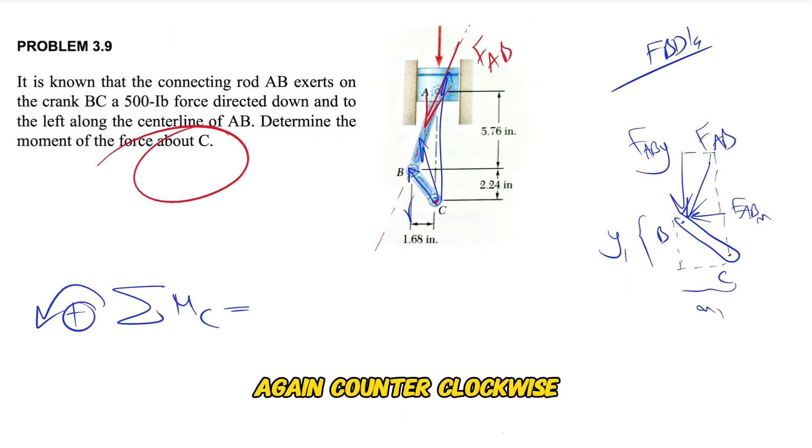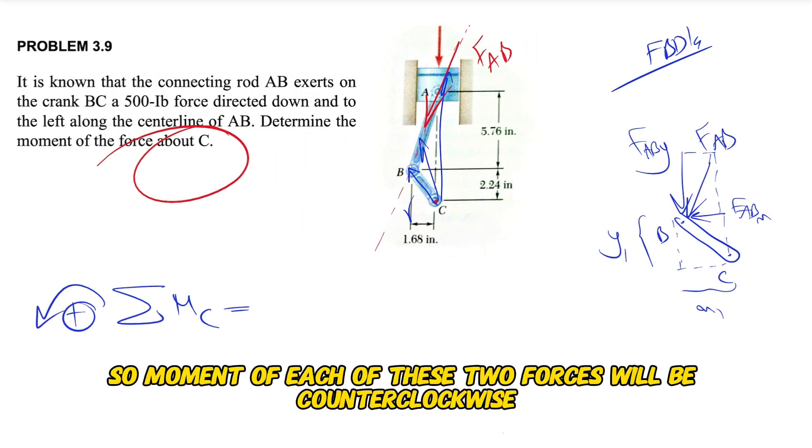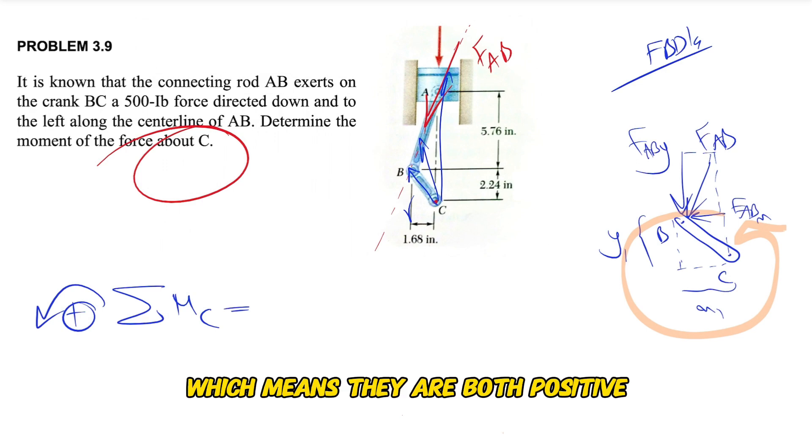So if you want to find the moment about point C, counterclockwise we consider positive. So the moment of each of these two forces will be counterclockwise, which means they are both positive.